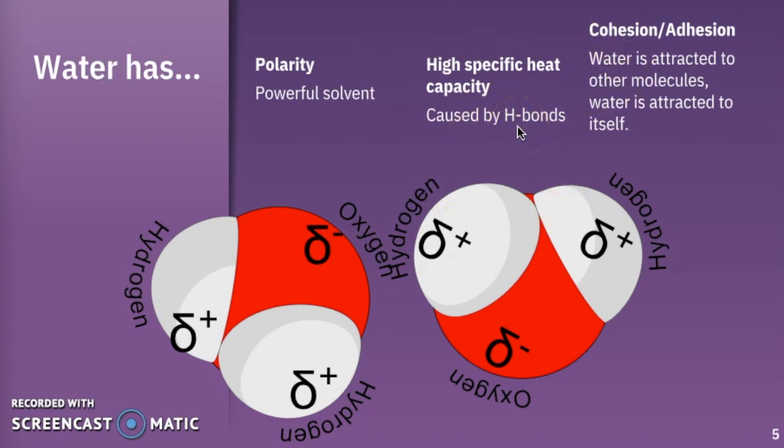When we're talking about high specific heat capacity, this is also caused by these hydrogen bonds, and this is the amount of energy that is absorbed or lost by one gram of substance to change the temperature by one degree Celsius. And because water molecules form so many hydrogen bonds between each other, we need a lot of energy to break down those bonds.